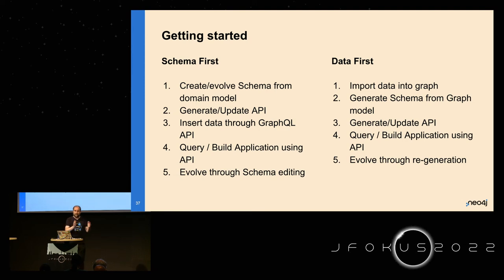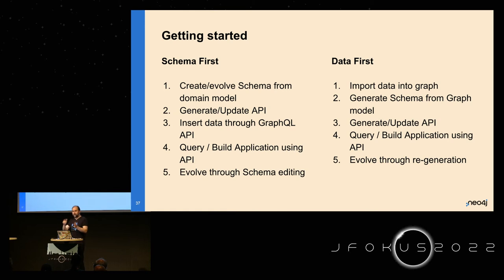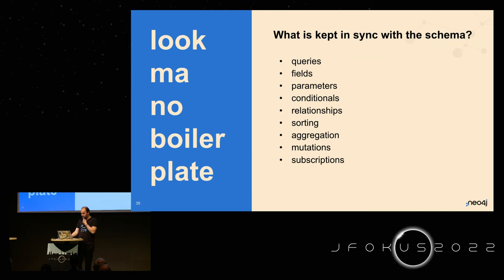GraphQL schema really cares about type names, field names, and relationship names. You can use the schema to drive the database content and vice versa. When you want to evolve your model, you just regenerate your type definitions, or the other way around — when you start changing the schema, the evolution is handled nicely and everything is kept in sync.